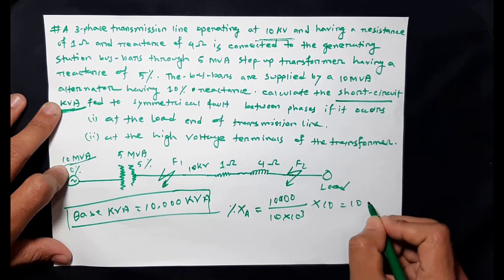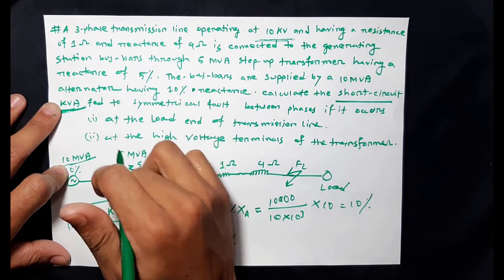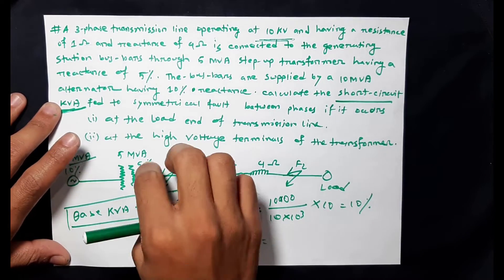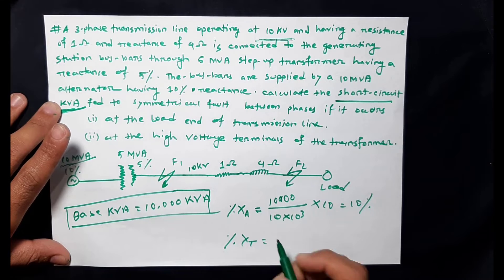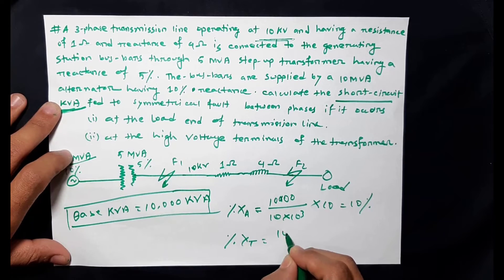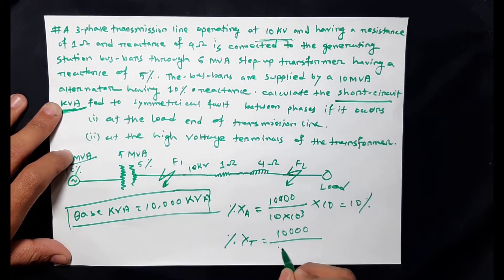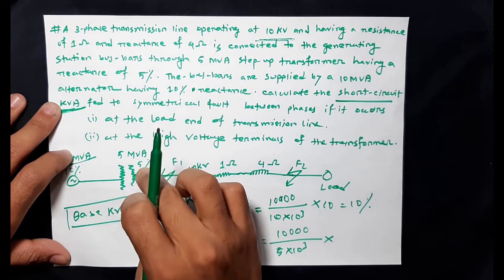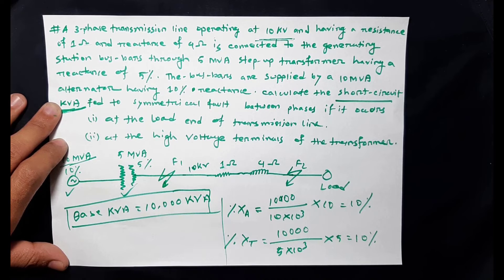The percentage reactance of the transformer on base is XT. XT is the percentage reactance on base. We convert it — 10,000 divided by rated kVA of 5 MVA (which is 5), multiplied by 10 divided by 3, into the percentage reactance at rated kV. The answer is 10 percent. Then the equation gives 2, and with the transmission line it becomes 8.